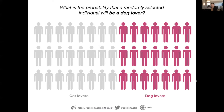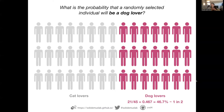Imagine we have access to the whole population. We go out and ask people their preference — some are cat lovers, some are dog lovers. If I know the composition of the population, answering this question is very easy: I just count how many people are dog lovers divided by the whole population. In this made-up population of 45 people, there are 21 dog lovers divided by 45. That gives 0.467, which is 46.7% — approximately 1 in 2.